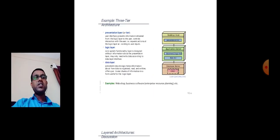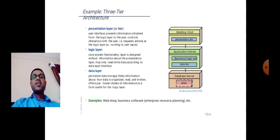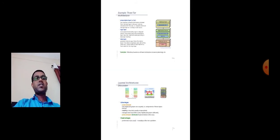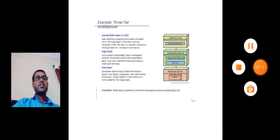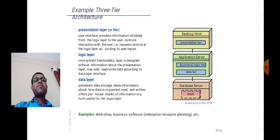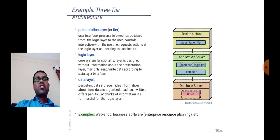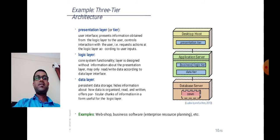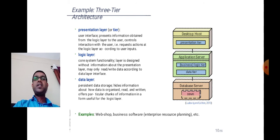Then we have to look at tier architecture. We are familiar with this concept. The presentation layer or tier is the user interface that presents information from the logic layer to the user, controlling interaction and requested actions at the logic layer. The logic layer is the core system functionality layer, designed without information about the presentation layer.